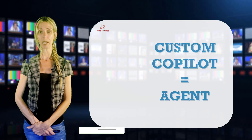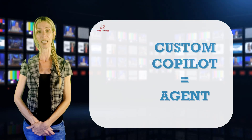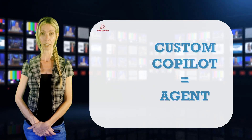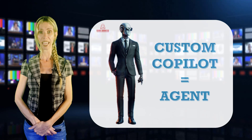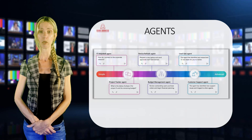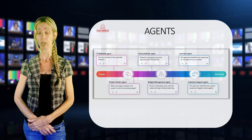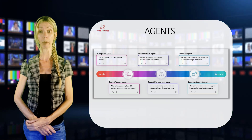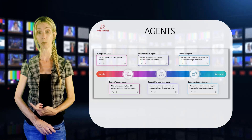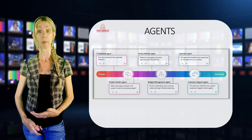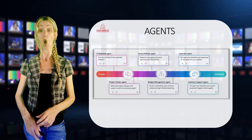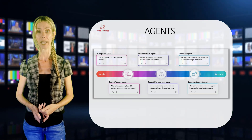A big difference here is that these agents actually have a lot more functionality than the custom co-pilots we're used to. These agents will actually handle specific business processes. Think about being able to have an agent that just handles the onboarding of a new customer, or maybe that's handling an order process, where it will actually check the inventory and see if there's an approval process. Maybe if an order is over a thousand dollars, it wants to go through an approval process — all of that can be handled by an agent.